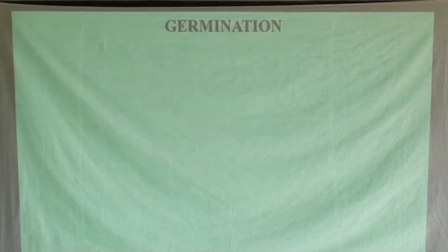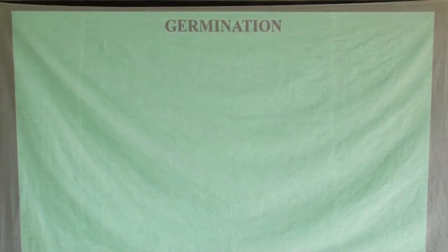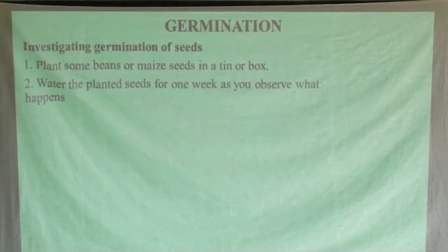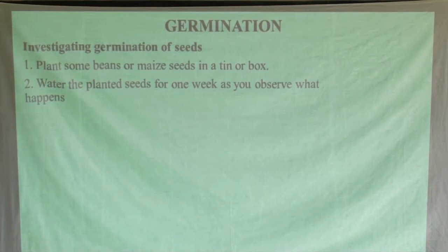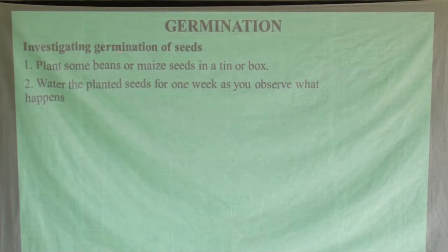We want to see how seeds can germinate — grow and turn into seedlings. This is very important. We can investigate germination of seeds, finding out what takes place and what is required for our seeds to germinate. Looking at point one, we say plant some beans or maize seeds in a tin or box, because if you do it you will really observe this process of germination taking place.